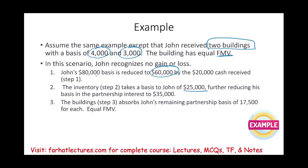In this scenario John recognizes no gain and no loss. We take $80,000 minus $20,000 to $60,000, then minus $25,000 to $35,000. The $35,000 that's left needs to be allocated to two assets. Since the buildings have equal fair market value, we do a step-up and assign each building $17,500 — 50% and 50%. The opposite would be true if we had to do a step-down.